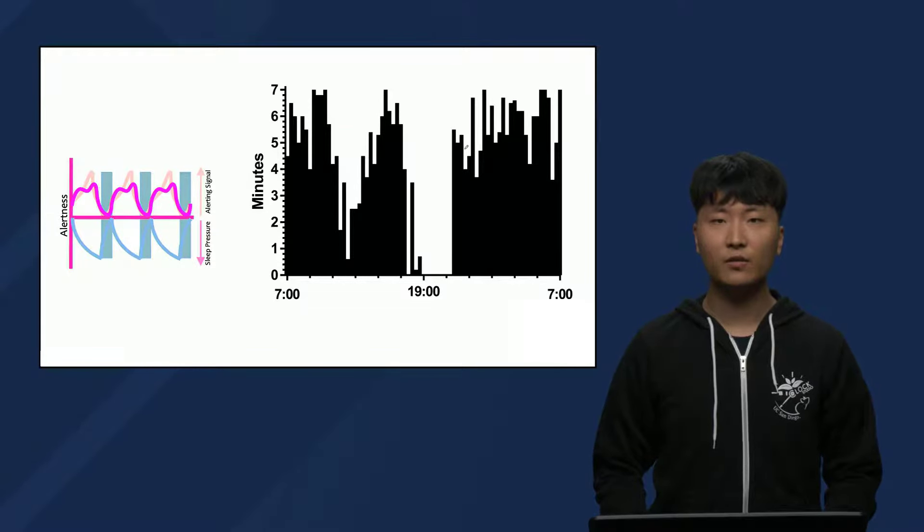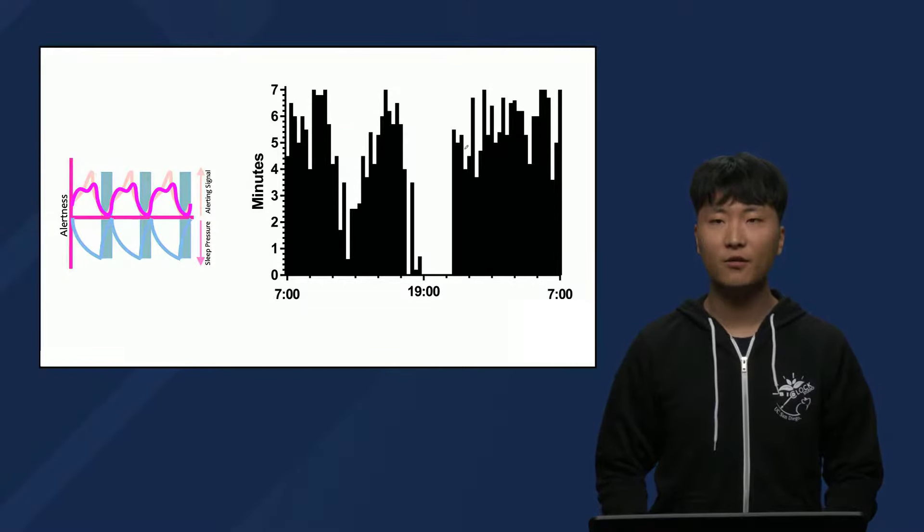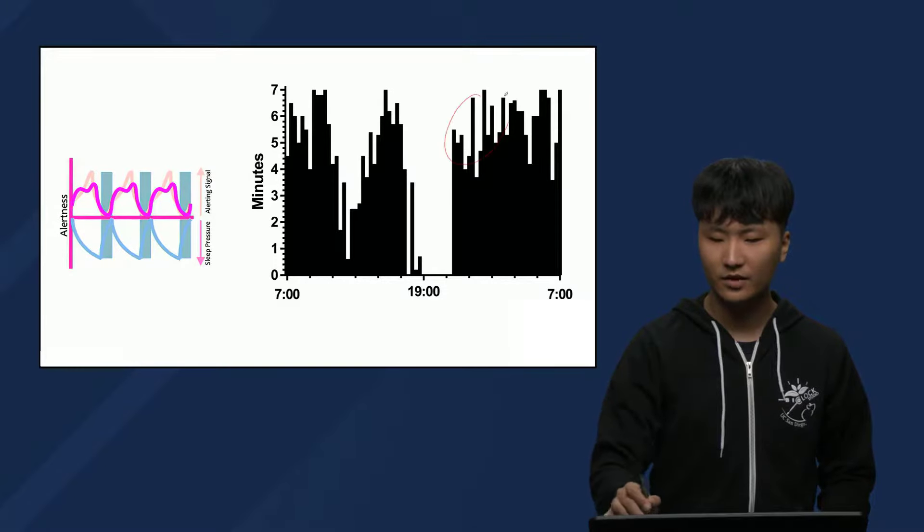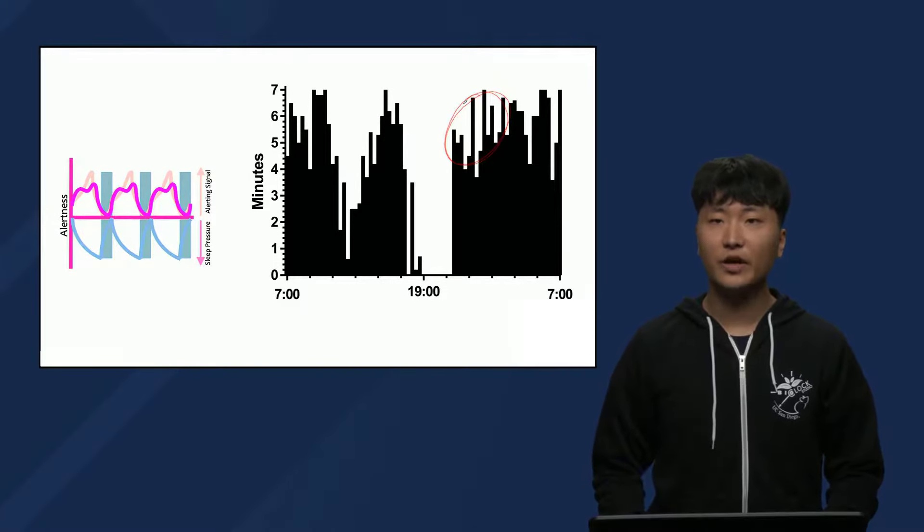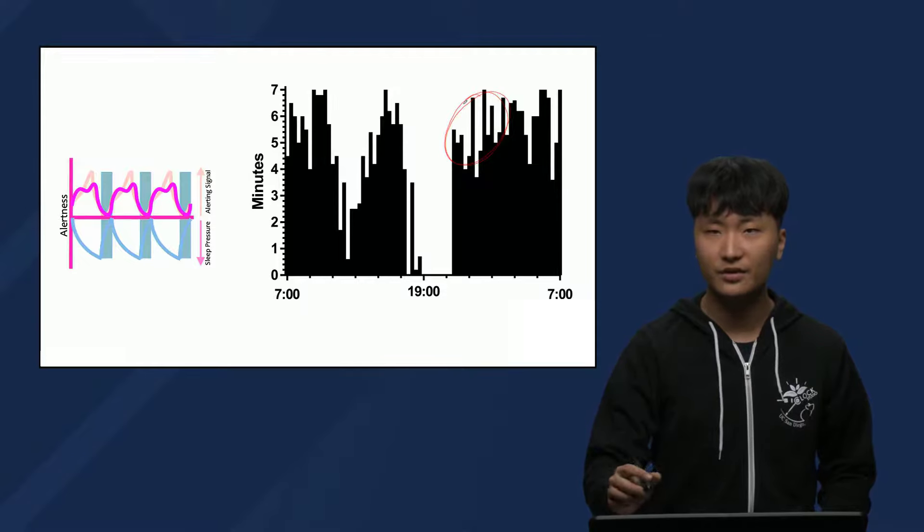Shortly after the forbidden zone, the participant suddenly was able to sleep again. This period where the participant could fall asleep easily again right after a period of high alertness is known as the gate for sleep.